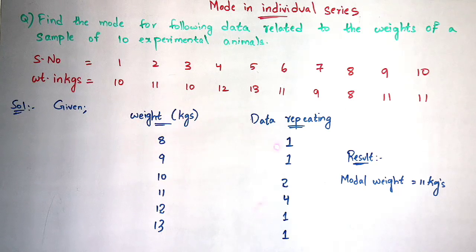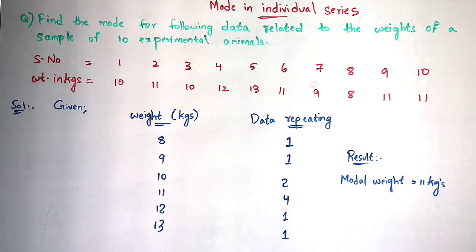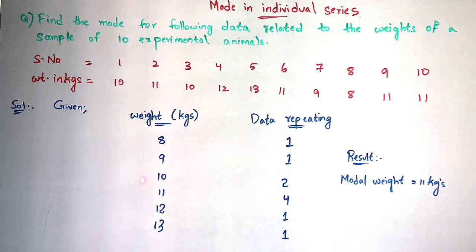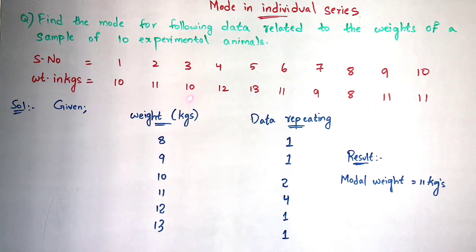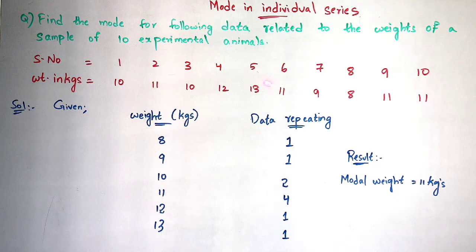8 has been repeated only one time, so you write 1 in the data repeating column. Coming to 9, it has been repeated only one time. Coming to 10, it has been repeated 2 times. Coming to 11, it has been repeated 4 times - 1, 2, 3, and 4 - so you write 4. 12 and 13 have been repeated only one time in the given data.